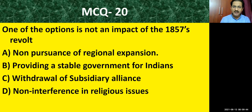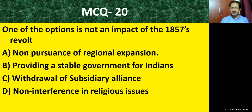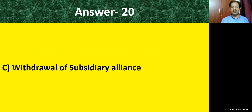Now we are on the last question, number twenty: one of the options is NOT an impact of the 1857 revolt — note the negative word. Options: non-pursuance of regional expansion; providing stable government for Indians; withdrawal of subsidiary alliance; non-interference in religious issues. The correct answer is: withdrawal of subsidiary alliance was NOT an impact of the 1857 revolt.